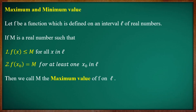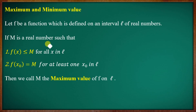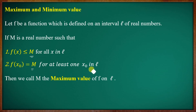Extreme Value Theorem. First, maximum value and minimum value. Let f be a function which is defined on an interval L of a real number. If M is a real number such that: first, f(x) is less than or equal to capital M for all x in L; second, f(x₀) equals capital M for at least one x₀ in L, then we call M the maximum value of f.